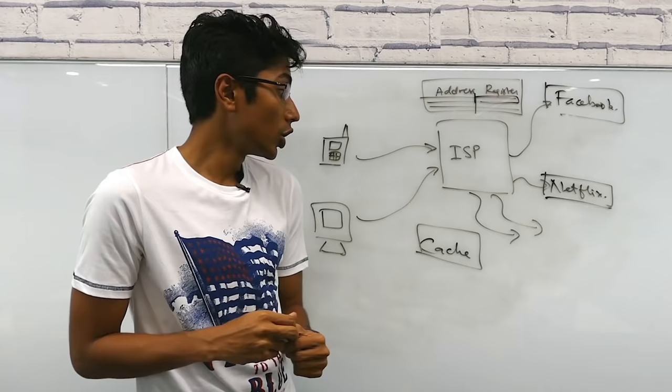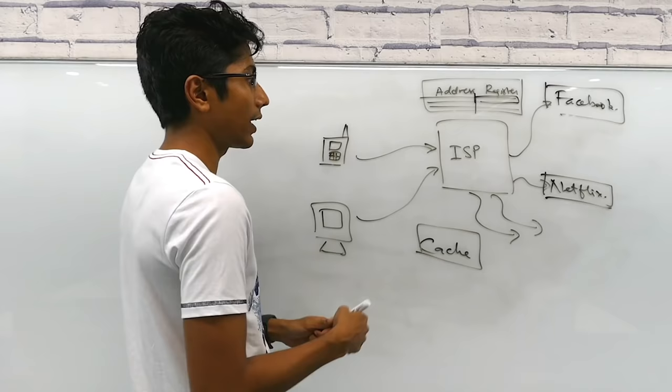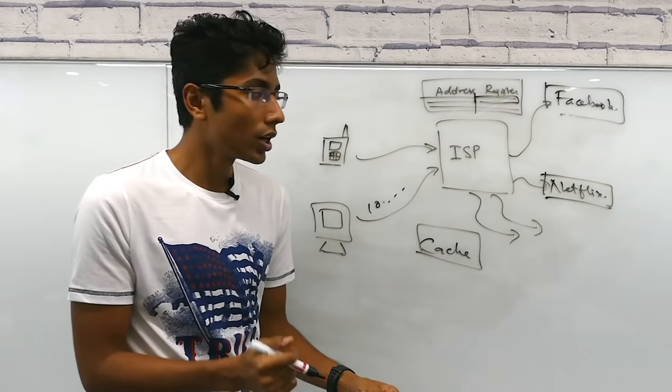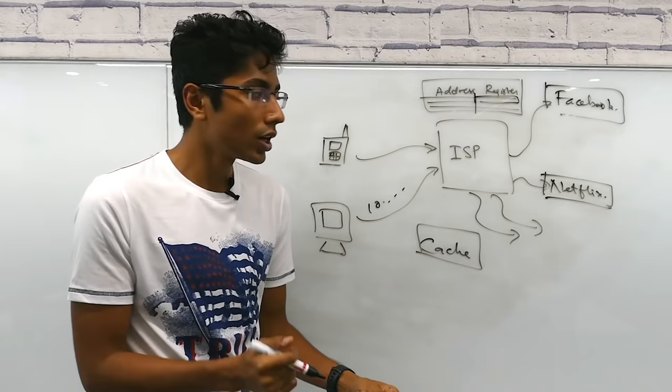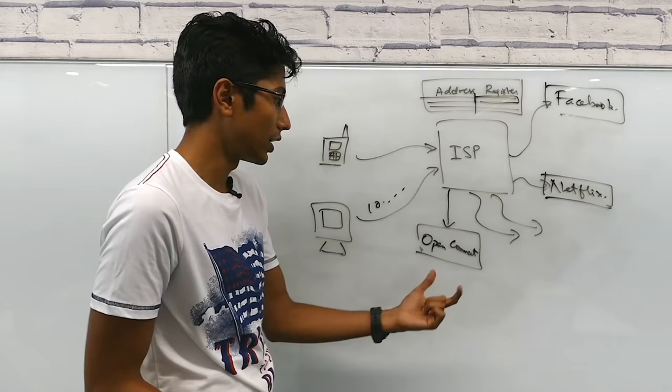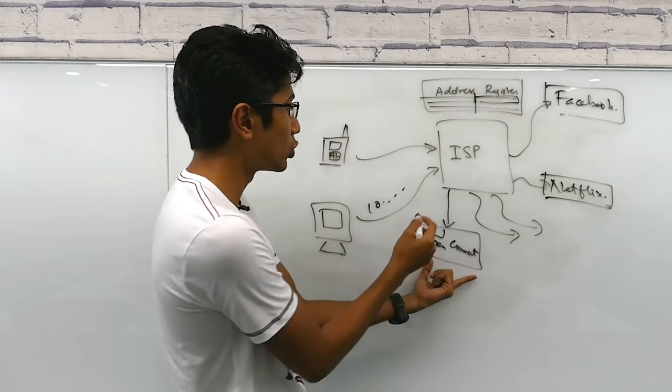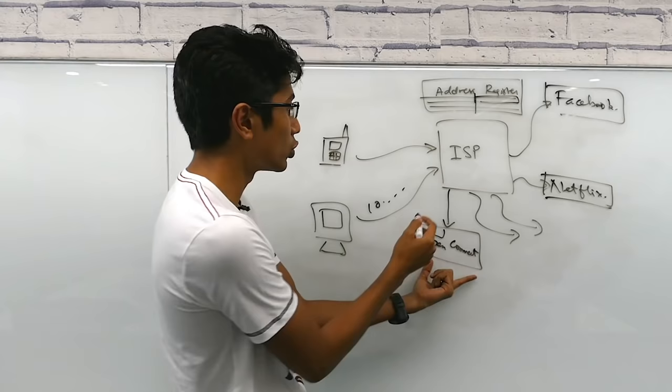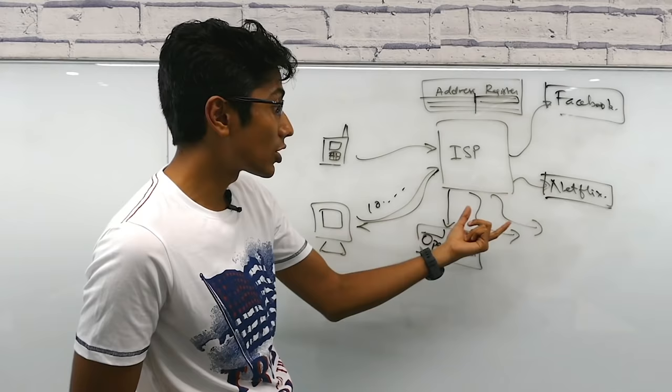Now, Netflix extended this concept and applied it to ISPs. So whenever the ISP gets a request from India, let's say, and it's a movie from Bollywood, they won't go and hit the Netflix US servers. They're going to ask a cache which has been placed by Netflix. This is called the Open Connect box. In this box, you have a ton of movies. You can assume this to be something like a hard drive. If you find the movie here, that's well and good. You just return it quickly. So that's a lot of bandwidth saved, a lot of time saved. That's much better user experience.